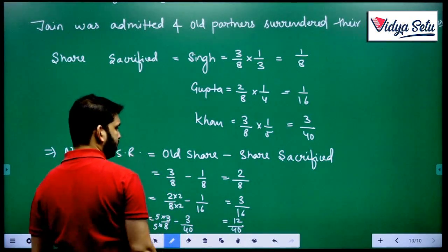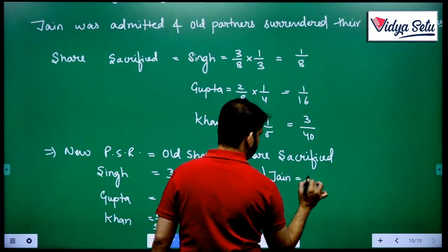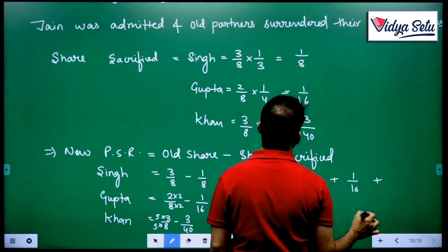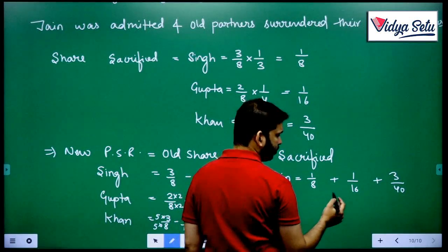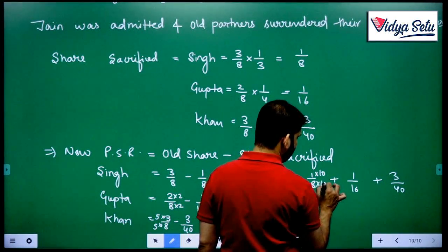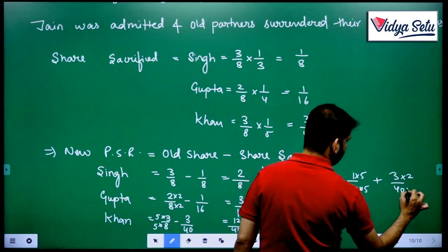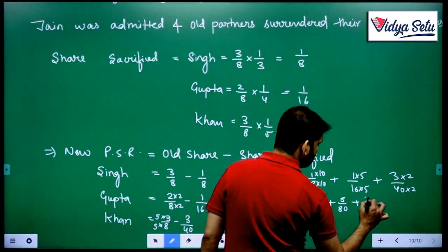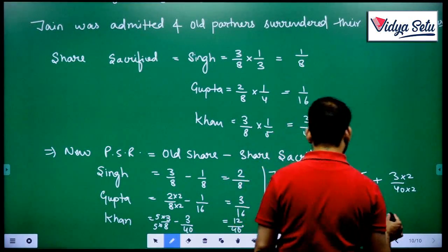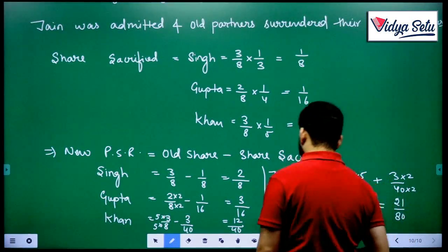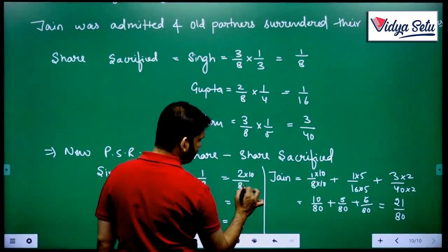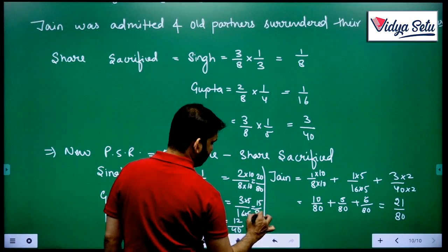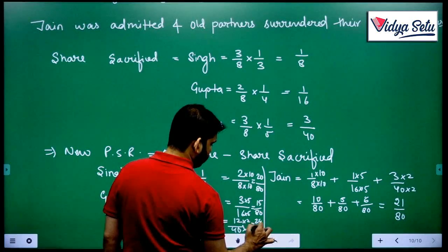Whatever is their sacrifice is the gain for Jain, equals to 1 by 8 plus 1 by 16 plus 3 by 40. To make everyone equal, multiply by 10, 5, and 2 respectively. I get 10 by 80 plus 5 by 80 plus 6 by 80, that gives 21 by 80. And the old shares become 20 by 80, 15 by 80, and 24 by 80.